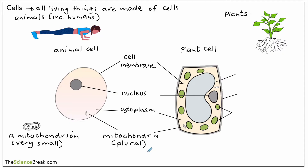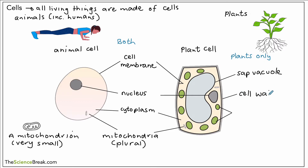So that's the parts found in both animal cells and plant cells. Now let's look at the parts found in plants only. Starting at the top, this bag-like structure found inside is called a sap vacuole. Just below that in gray — the outer layer of the cell — this is called the cell wall. Remember to call it the cell wall in plants; don't mix it up with the cell membrane. And finally, the green parts are called chloroplasts.